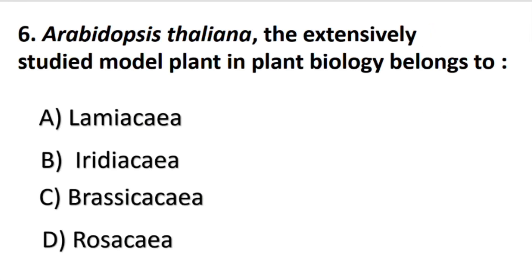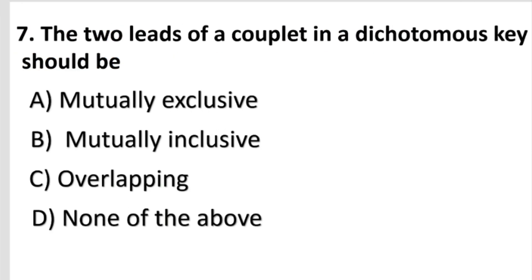Arabidopsis thaliana, the extensively studied model plant in plant biology — which family does it belong to? The answer is C part: Brassicaceae.